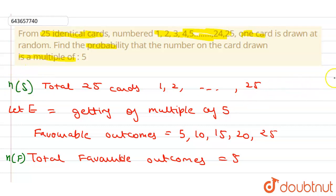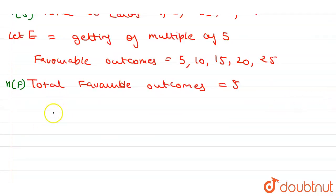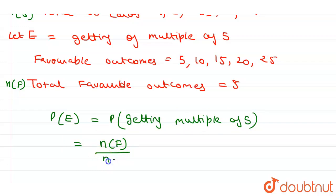So we can say that probability of E, probability of getting multiple of 5, equals to number of favorable outcomes divided by number of sample space which equals to 5 divided by 25, so we can say 1 by 5. So this is our answer.